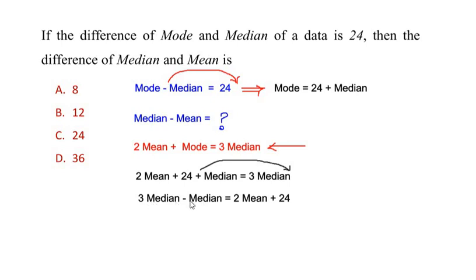Now 3 median minus 1 median gives us 2 median, so we have 2 median is equal to 2 mean plus 24. Now we have to get median minus mean, which means we bring the 2 mean on this side of the equation and write here as 2 median minus 2 mean is equal to 24.